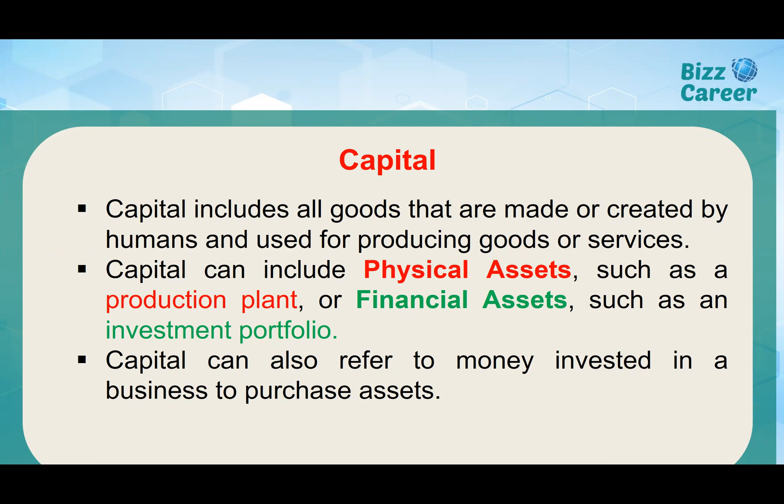Physical capital is basically the production plant, machineries, and all the physical capacity to produce goods and services for your business. Financial capital is basically your investment. Capital can also be referred to as money invested in the business to purchase assets.